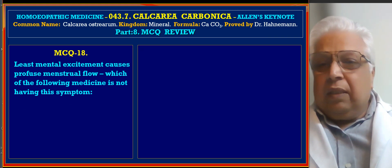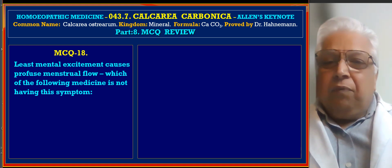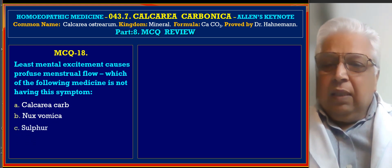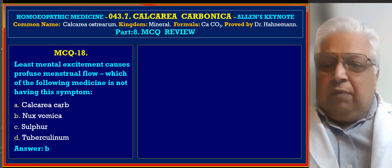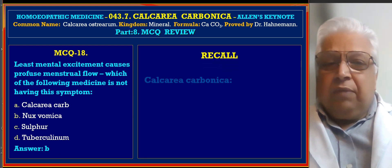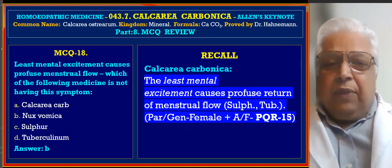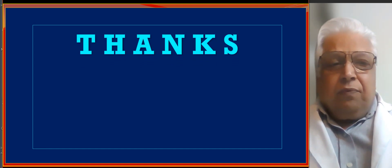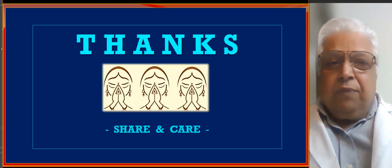MCQ 18: Least mental excitement causes profuse menstrual flow — which of the following medicine does not have this symptom? A. Calcarea Carb, B. Nux Vomica, C. Sulphur, D. Tuberculinum. Answer is B, Nux Vomica does not have this symptom. Reference from Allen's Keynote under Calcarea Carbonica: the least mental excitement causes profuse return of menstrual flow, with Sulphur and Tuberculinum also noted in brackets. Thanks friends, thank you very much for your patient listening.